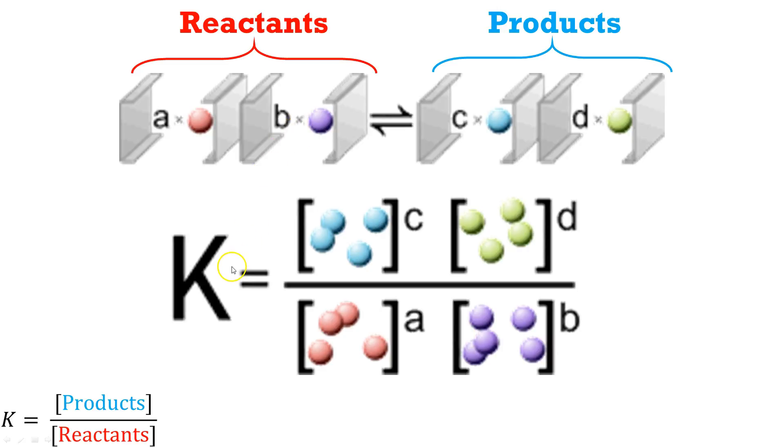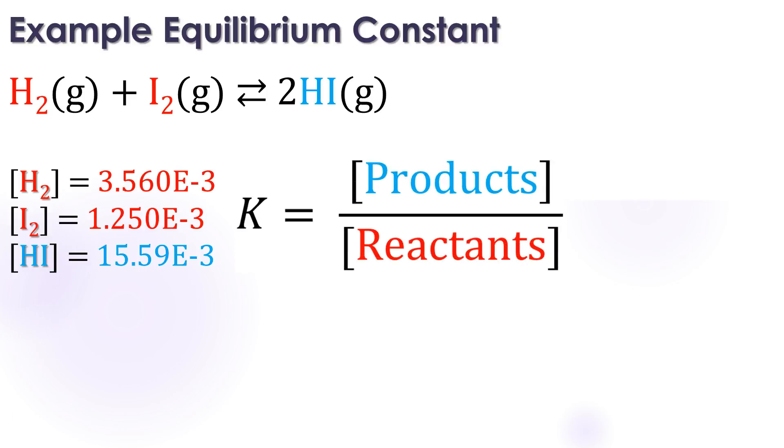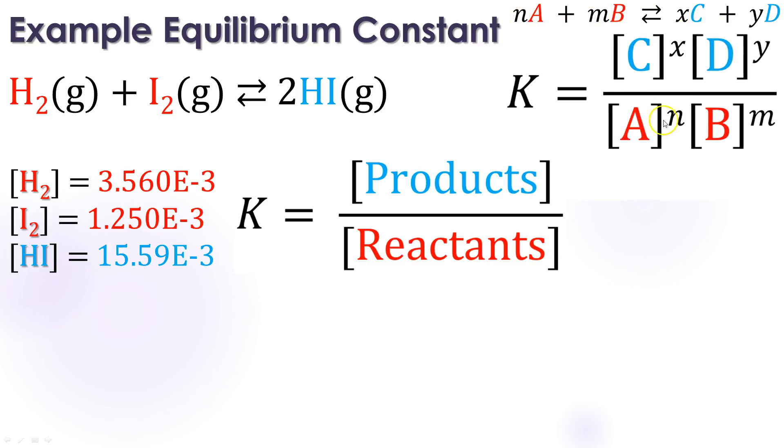So let's take a look at an example here. So I have the reaction of hydrogen plus iodine is going to be hydrogen iodide. Here's going to be the concentration that I just happen to be given. So at equilibrium, this is what I have. The question is, what's the equilibrium constant? So remember, that's going to be the products over the reactants. So here again was my sample equation. And I put all that right there. And we're going to raise it to those powers there.